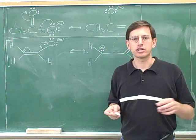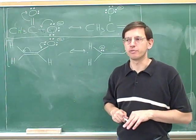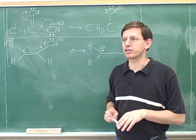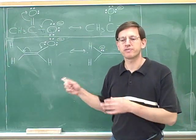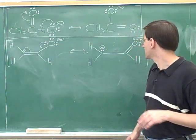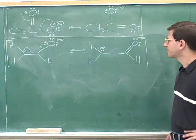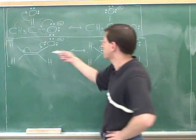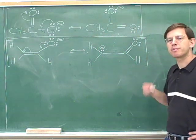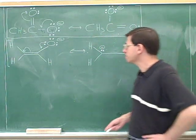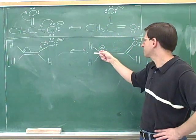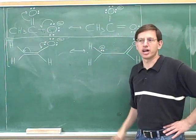That means that not every single resonance structure is going to get an equal weight in the blend. Some resonance structures are more significant than other resonance structures. How can you tell which resonance structures are more significant than others? There are a bunch of different factors to look for, and we'll be covering those as we go along. For example, which of these two resonance structures seems more significant? Remember the big thing to focus on is the charges: in this picture there's a negative charge on an oxygen, and in this picture there's a negative charge on a carbon.